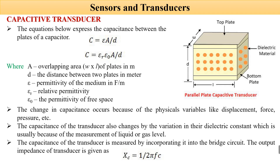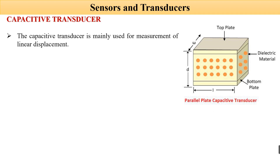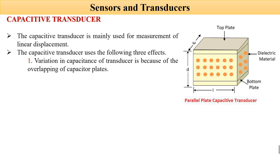The formula for capacitive reactance is: Xc = 1/(2πfC). The capacitive transducer is mainly used for measurement of linear displacement. The capacitive transducer uses the following three effects. Number one: variation in the capacitive transducer is because of the overlapping of the capacitor plates. The overlapping means the area facing each other — if that changes, capacitance will vary.